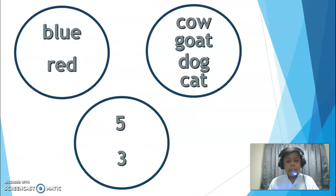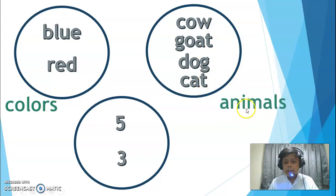So the answers: you have the first circle with blue and red, cow, goat, dog, cat in the second group, and then the third group is five and three. So my question is, why are they grouped together? What characteristics are common to them? Blue and red are both colors, right? Cow, goat, dog, and cat, they are all animals. And then three and five are numbers. So the concept of grouping things that have similar characteristics, that will be our topic today. We call that sets.